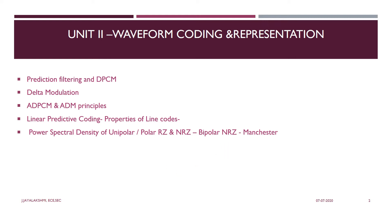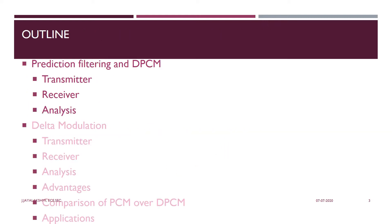For today's topic we are going to see the first modulation technique, that is differential pulse code modulation technique — its transmitter, the receiver part, and the analysis of it. The rest of the topics are going to be discussed in the next video.